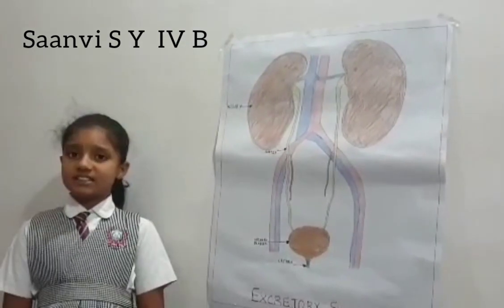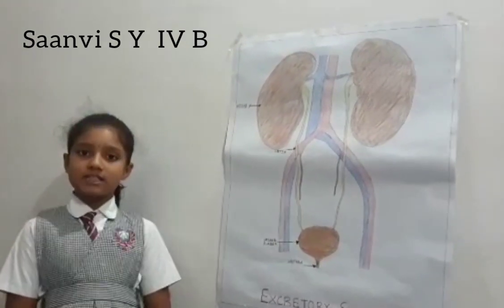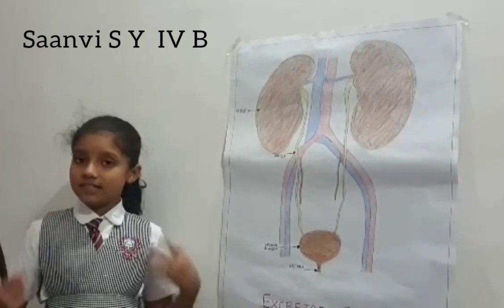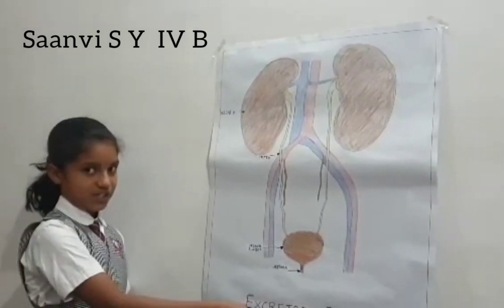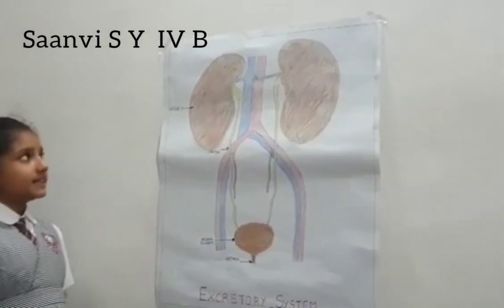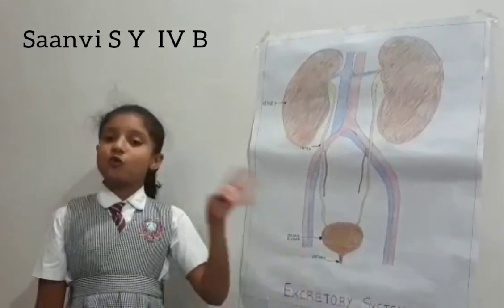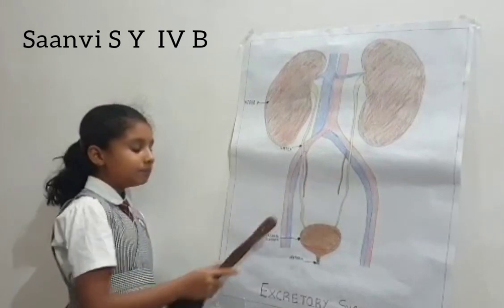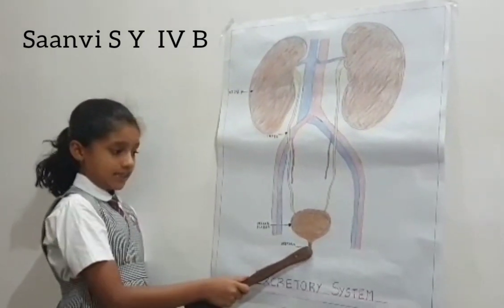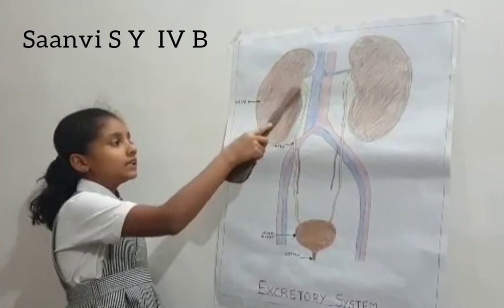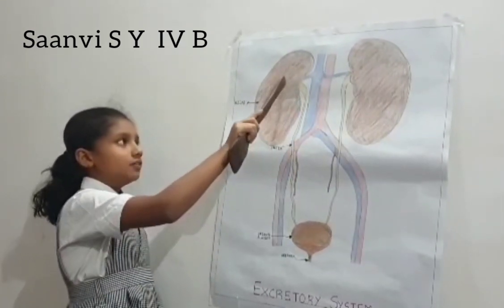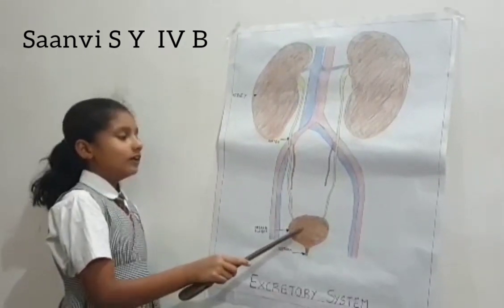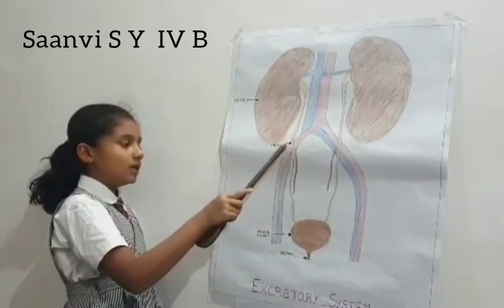The excretory system helps to remove waste from our body and the process of removing waste from our body is called excretion. This excretory system mainly contains 4 parts: a pair of kidneys, a pair of ureters, a urinary bladder, and a urethra. The urine is formed in the kidneys and the formed urine is passed to the urinary bladder through the thin pipes called ureters.